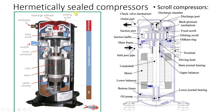Next compressor is hermetically sealed scroll compressor. This compressor is usually taller compared to reciprocating compressor. The bottom side has oil, the middle part is the suction chamber, and the top red-colored part is the discharge chamber. At the bottom there is an oil pickup tube, stator, and rotor. Then there is the crankshaft, and we have two scrolls: one fixed scroll and one orbiting scroll. Below the orbiting scroll there is the Oldham ring.